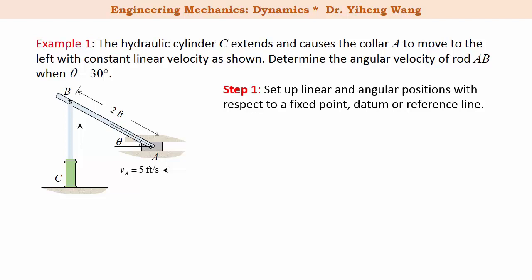Since the linear velocity of point A is given, this will be our point and its position as A is set from a fixed point, point O. And the angular position of this rod theta is naturally set from the horizontal reference line passing through A.